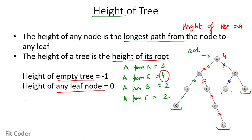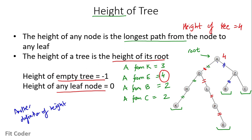In some books you may find another definition where height is the maximum number of nodes from the leaf node. For node A, the maximum number of nodes would be 5: A, D, L, P, E. In those books, the height of an empty tree is considered 0. But as per me, the correct definition is the maximum number of edges a node is away from the leaf nodes, so the height of this tree is 4.